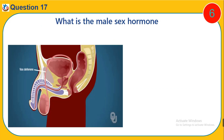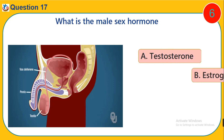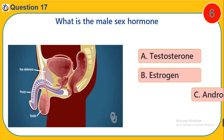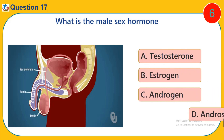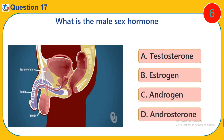Question 17. What is the male sex hormone? A. Testosterone. B. Oestrogen. C. Androgen. D. Androsterone.